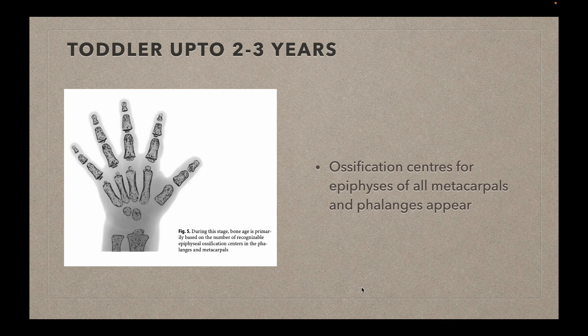The next stage is the toddler stage, up to two to three years of age. During this stage, bone age is roughly based on the number of recognizable epiphyseal ossification centers in the phalanges and the metacarpals.